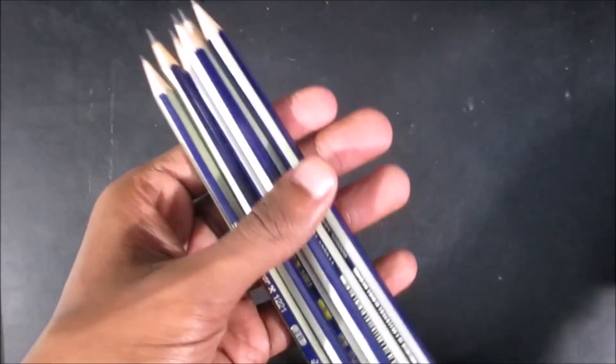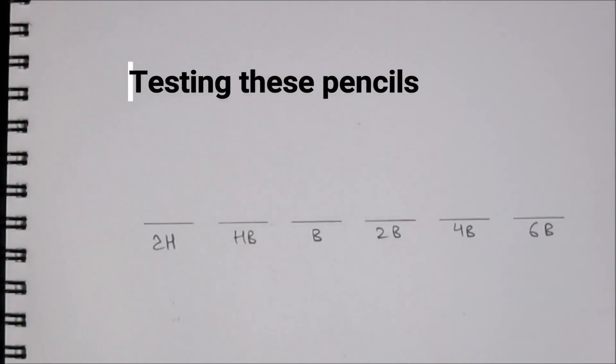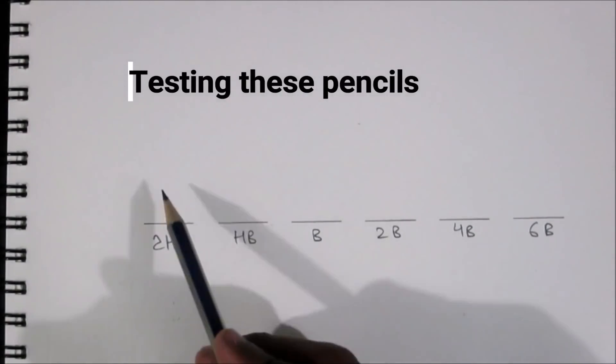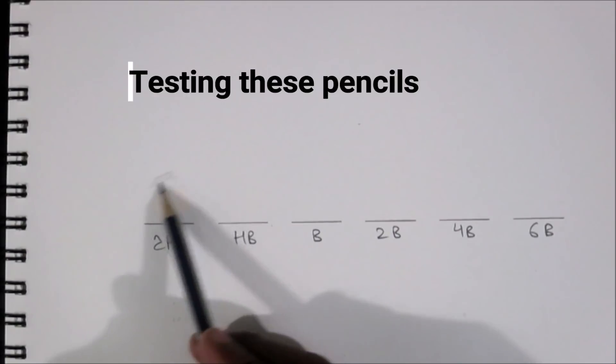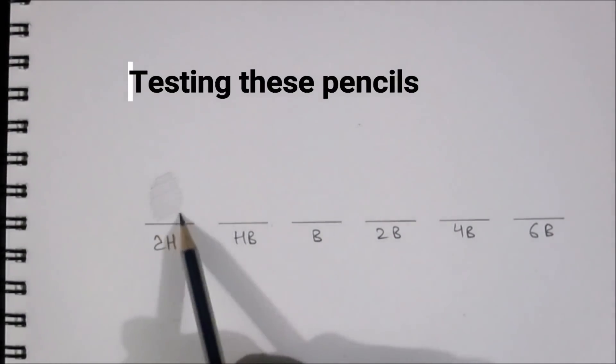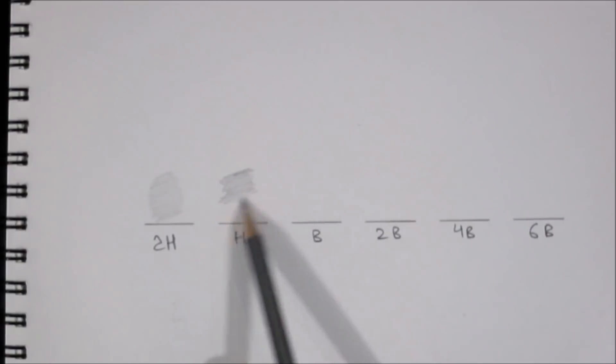First I will show you 2H pencils. I will go from light to dark: 2H, HB, B, 2B, 4B, 6B. You can see the progression.